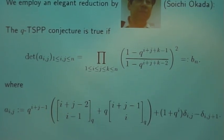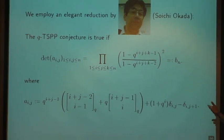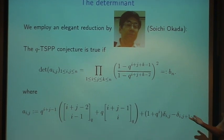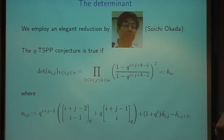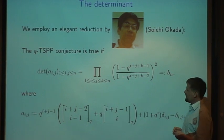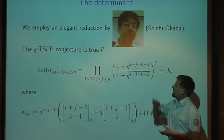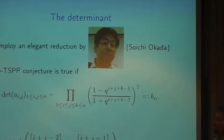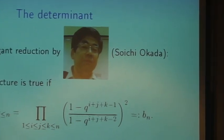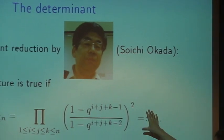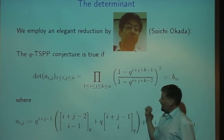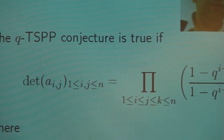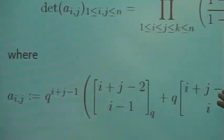From now on, unfortunately, we can forget about all these nice pictures because we will now do a reformulation of the problem that allows us to attack it but then somehow forgets about all these pictures. Soichi Okada has proven the following theorem: the q-TSPP conjecture that we want to prove is true if this determinant evaluation holds. We define this function aij, the matrix entries.